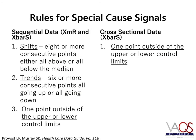The rules for detecting special cause signals are similar in XMR and X bar and S. Here, we are presenting the detection rules used by the Institute for Healthcare Improvement, which can be found in the Healthcare Data Guide. These detection rules are just one option among several different sets of detection rules that you can choose from. The choice of detection rule depends on trade-offs between type 1 and type 2 error, which will be covered in future mini-modules. For sequential data, the rules for detecting special cause signals are the same for XMR and X bar and S charts: shifts, trends, and a single point outside of the upper or lower control limits all indicate special cause variation. For cross-sectional data, the data points represent data from different facilities, units, or clinics collected at the same time. Therefore, we cannot use the detection rules for shifts and trends because the data does not consist of consecutive points. For cross-sectional data with the X bar and S chart, the only rule for detecting special cause variation is a single point outside of the upper or lower control limits.